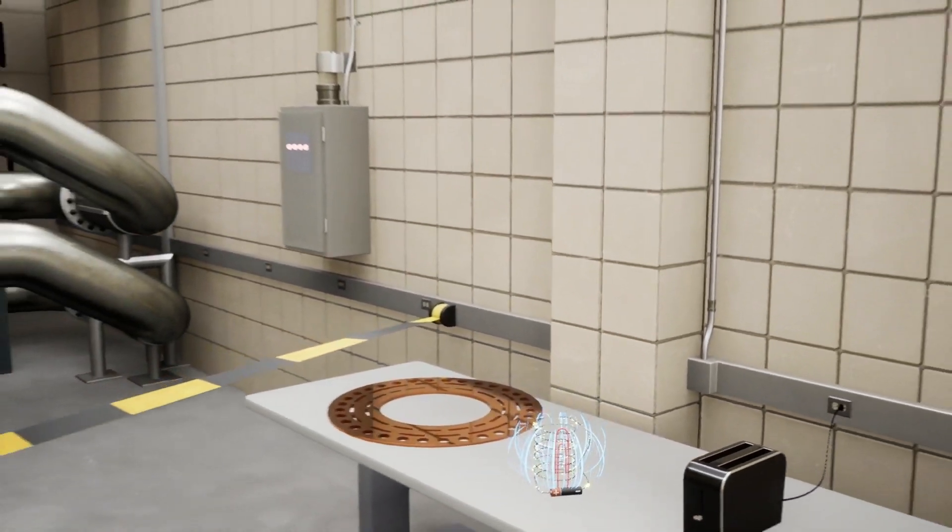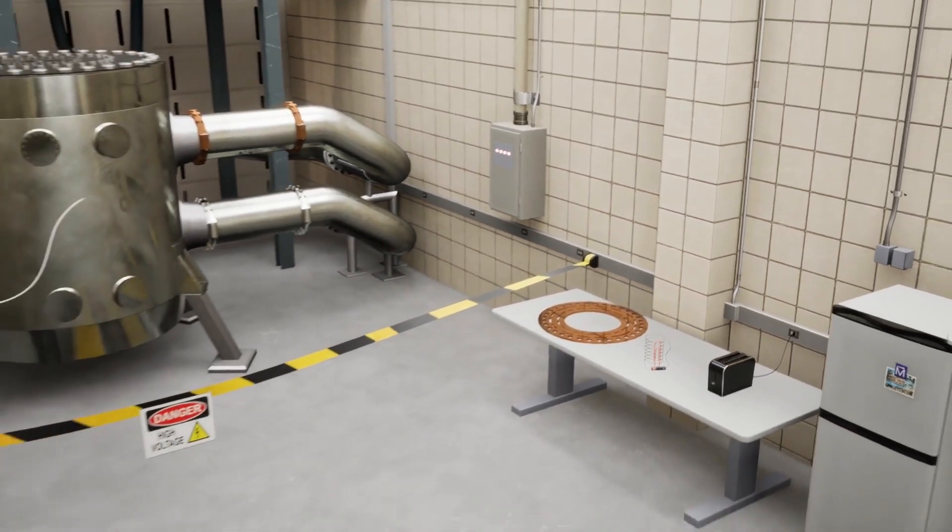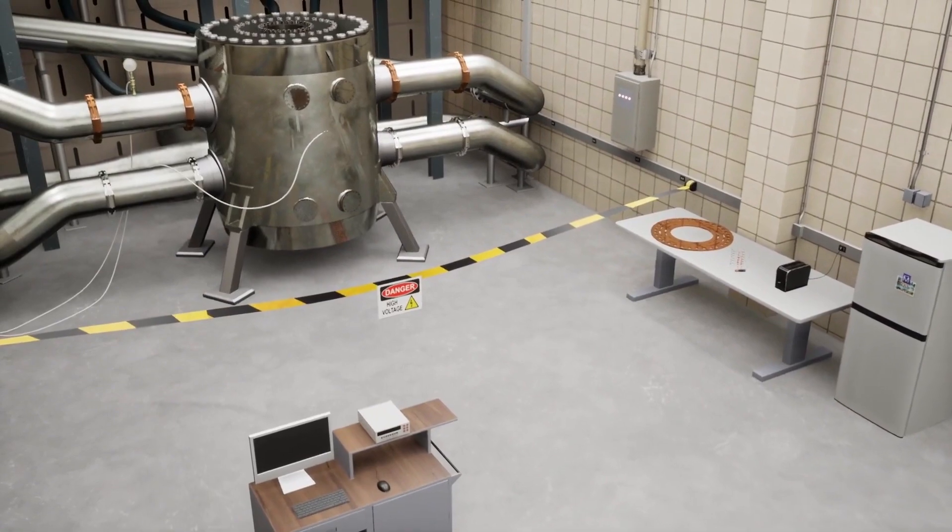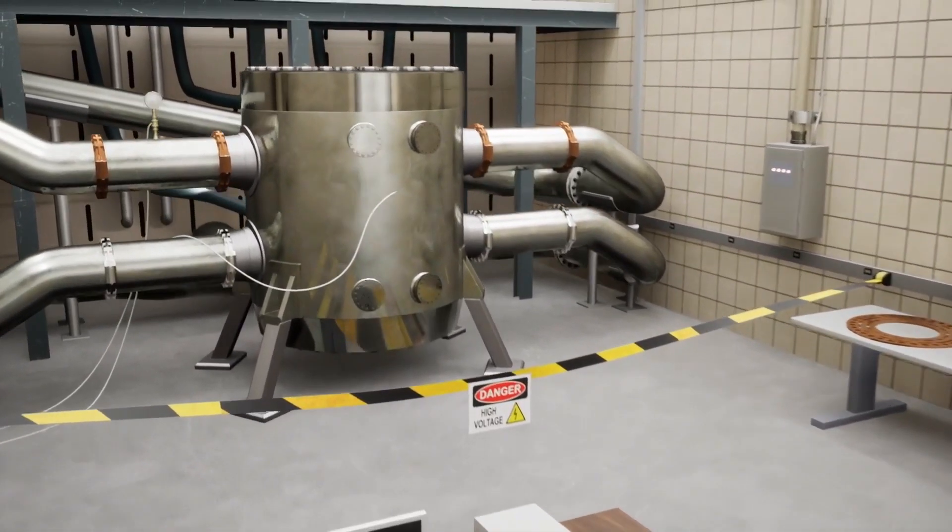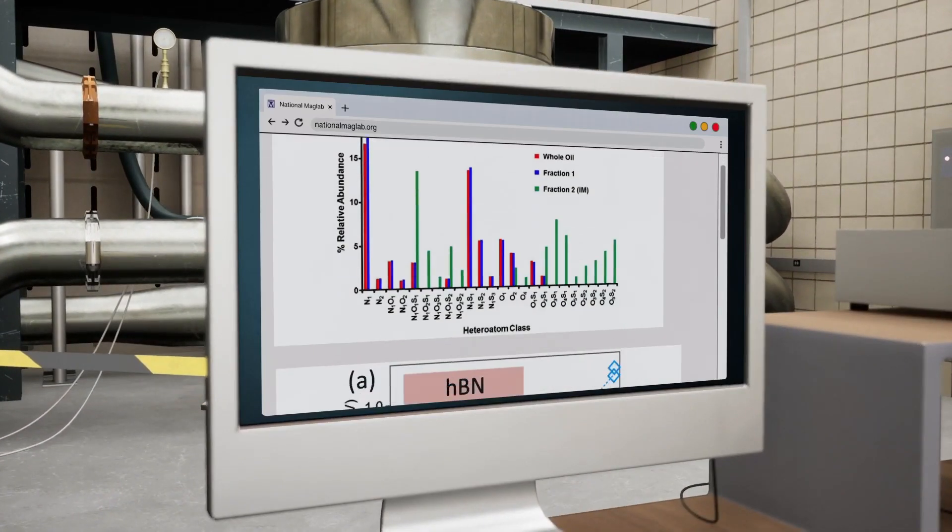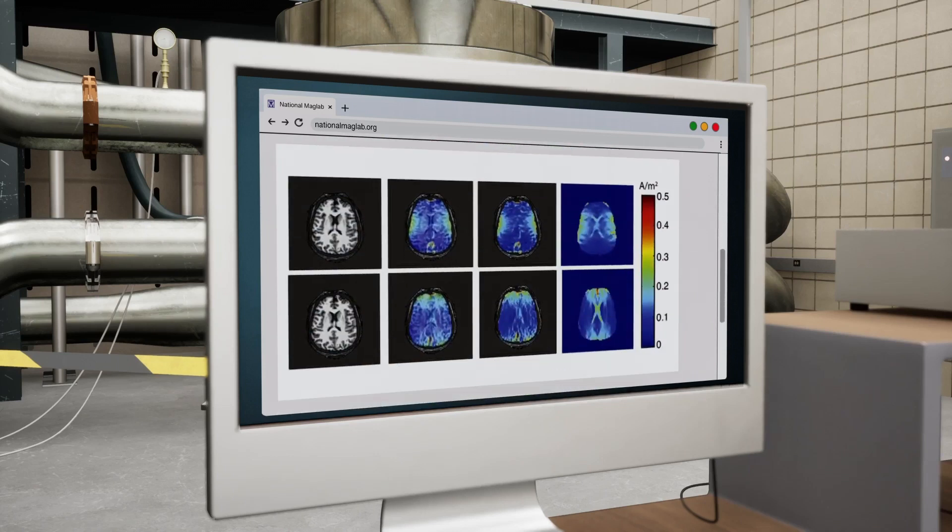But there's a lot more you can do with electromagnets than just pick up paperclips. Powerful research magnets give scientists a way to peer inside everything from petroleum to semiconductors to the brain, and to see what's going on at the atomic level.